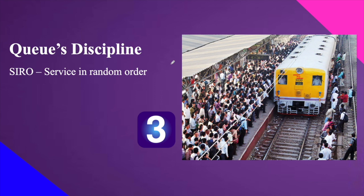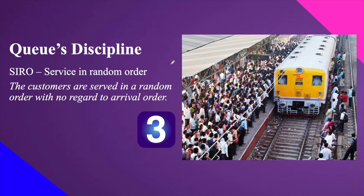The third discipline is SIRO — Service In Random Order. Customers are served in a random order with no regard to arrival order. This typically applies in overcrowded situations where order breaks down, such as when waiting for a bus on a busy road — when the bus arrives, people push in randomly regardless of who arrived first. It becomes a free-for-all.